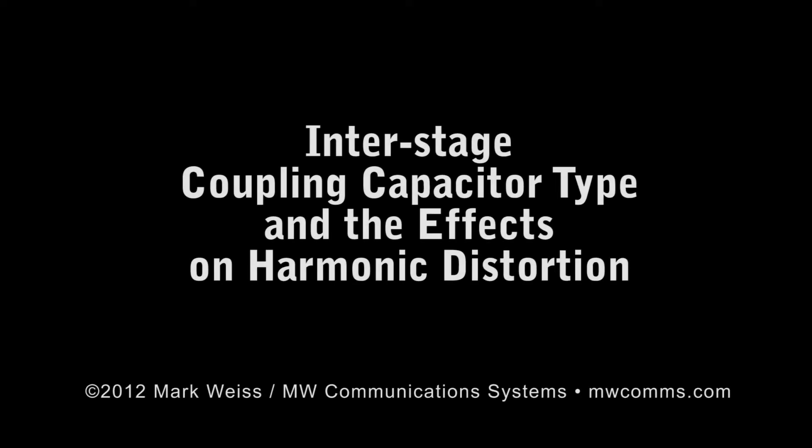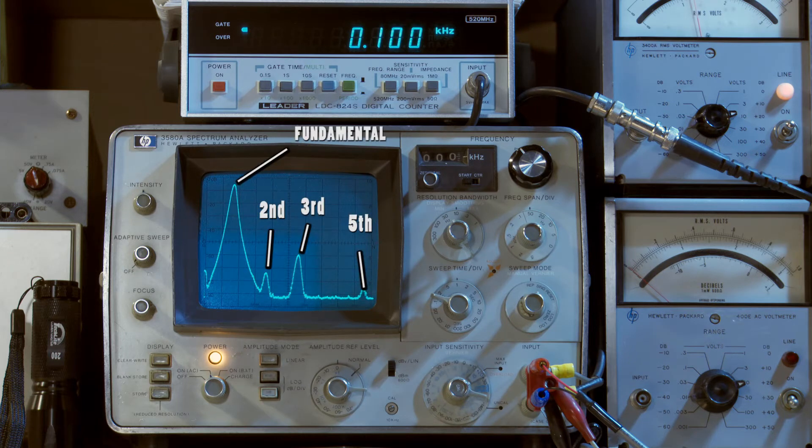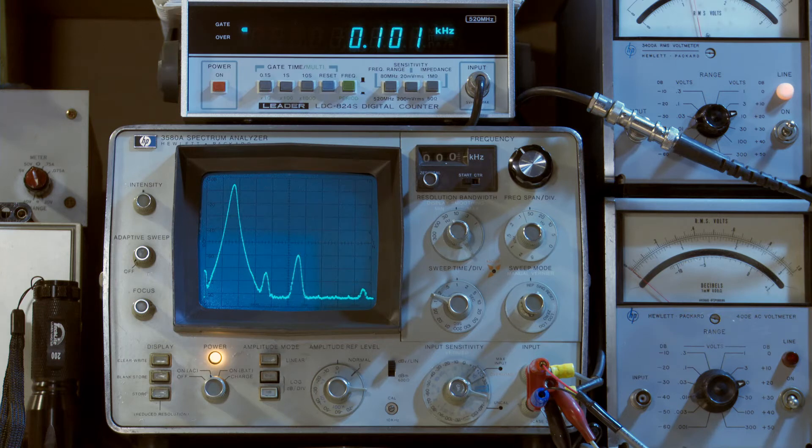Interstage coupling capacitor type and the effects on harmonic distortion. Here is a test signal at 100 Hz showing some odd order harmonic distortion. Fundamental, second, third, and fifth order are the predominant elements in this distorted signal.